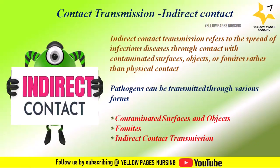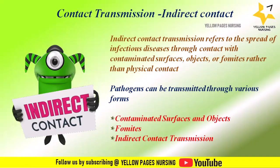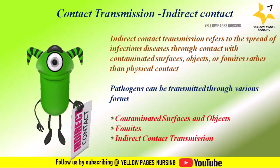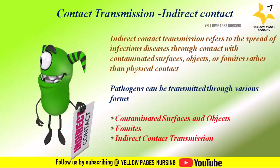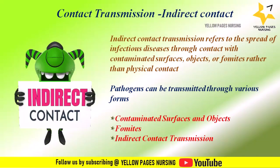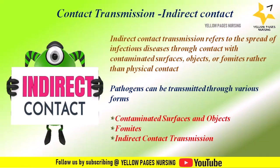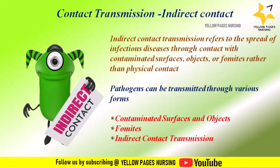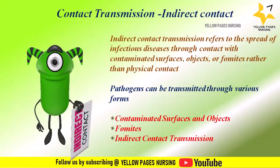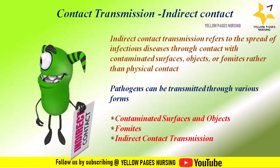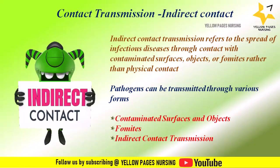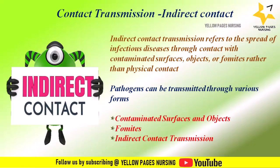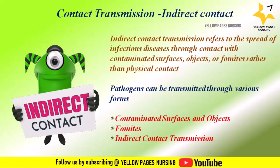Fomites are inanimate objects or materials that can harbor infectious agents and serve as a source of transmission. Examples of fomites include doorknobs, countertops, toys, computer keyboards, clothing, bedding, medical equipment, and shared items like utensils or towels.